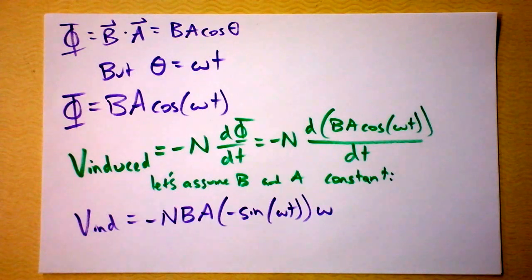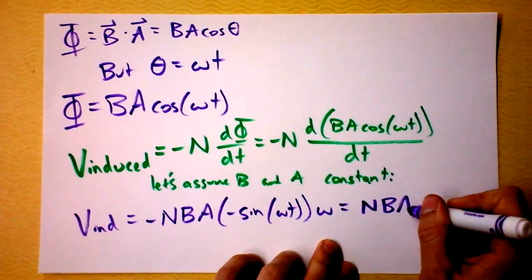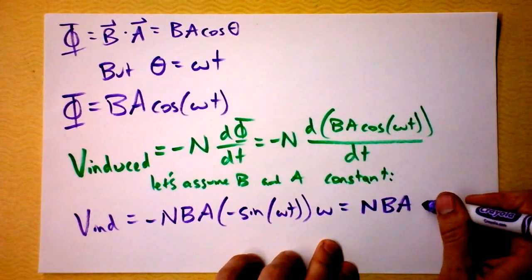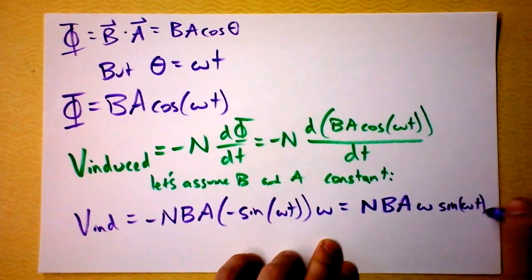I get negative N times B times A times negative sine of omega t times omega. Ah, now this is a really beautiful thing. Let's simplify that and we get the NBA. Awesome. Times omega times the sine of omega t.